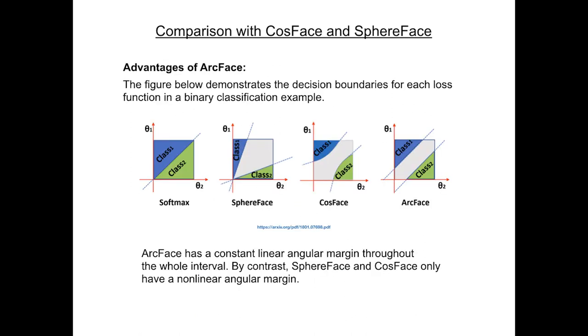This figure demonstrates the decision boundaries for each loss function in a binary classification example. The dashed lines represent the boundary decision and the gray areas of the decision margins. As you can see, Softmax doesn't create any decision margin between classes, whilst all the others do to some degree.